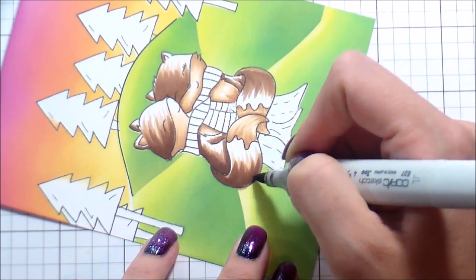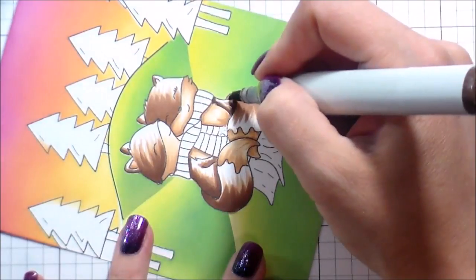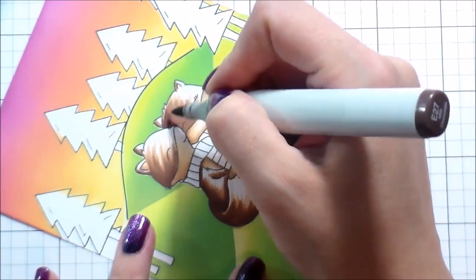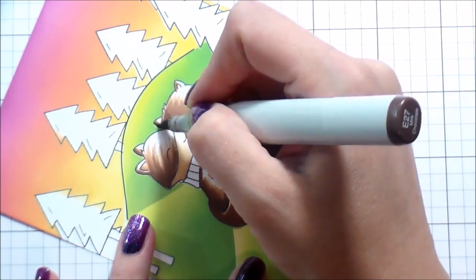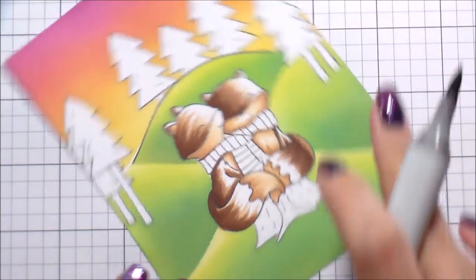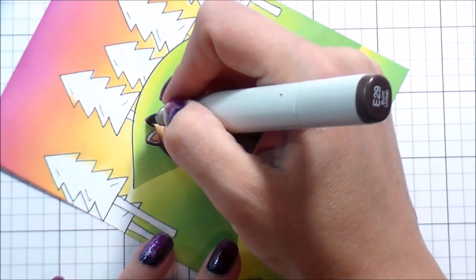The other thing that I'm going to do to differentiate the two, because they are quite cozy wrapped up in each other, and I want you to be able to tell that there are in fact two foxes, is for her I'm going to leave the E27 as her darkest color. I'm only going to add the E29 to him.